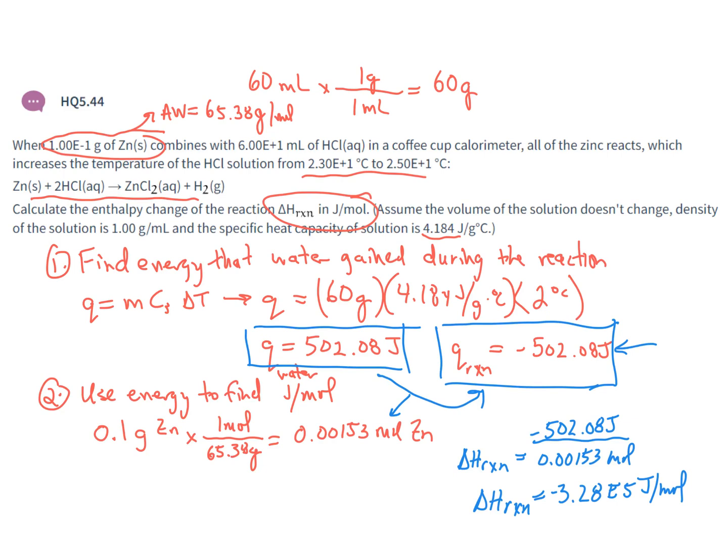Then to find the heat of reaction, we had to divide how many moles were actually in the reaction by the energy that was changed during the course of that reaction to get an approximate delta H for this reaction of negative 3.28 E to the 5 joules per mole.